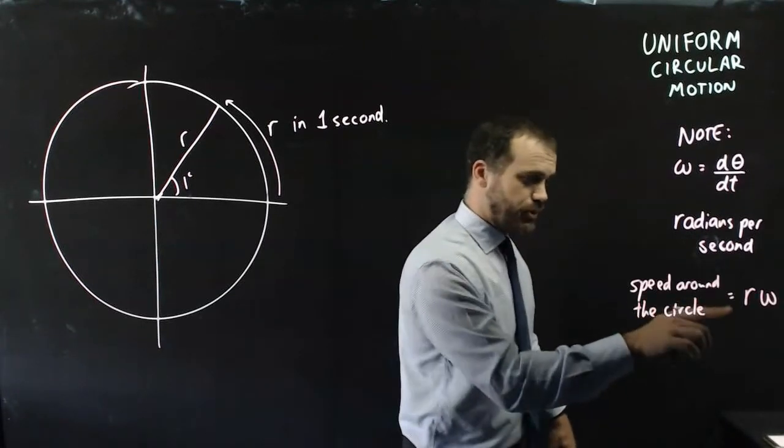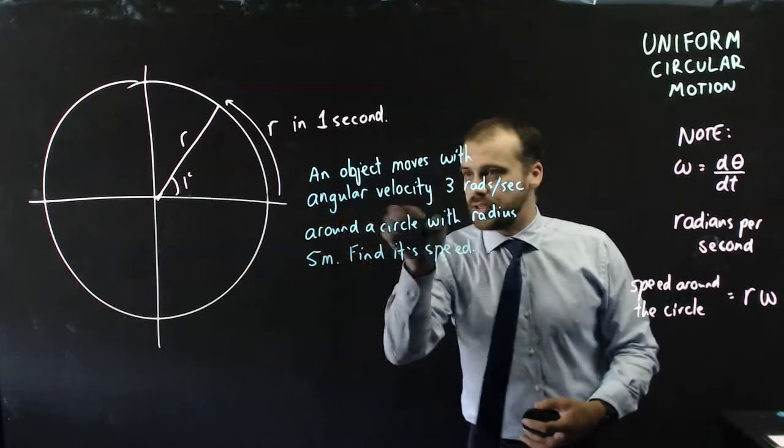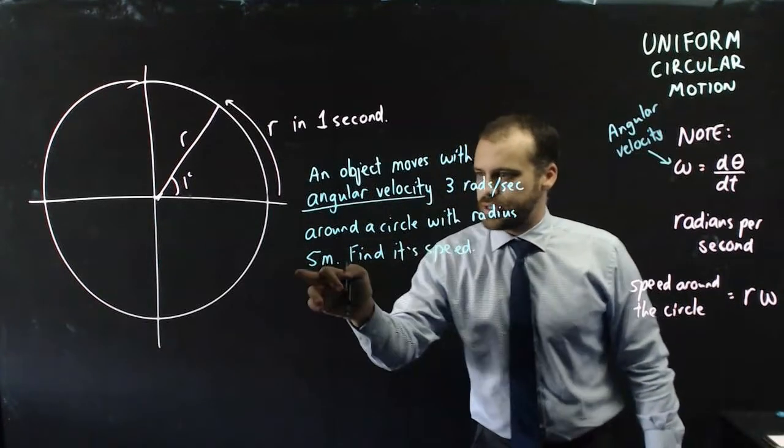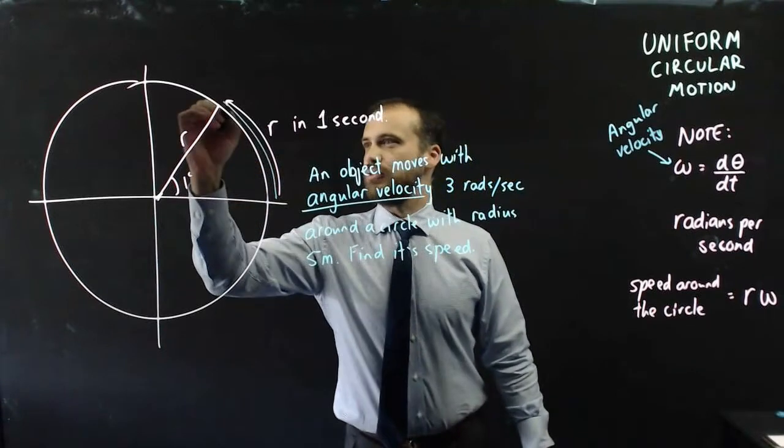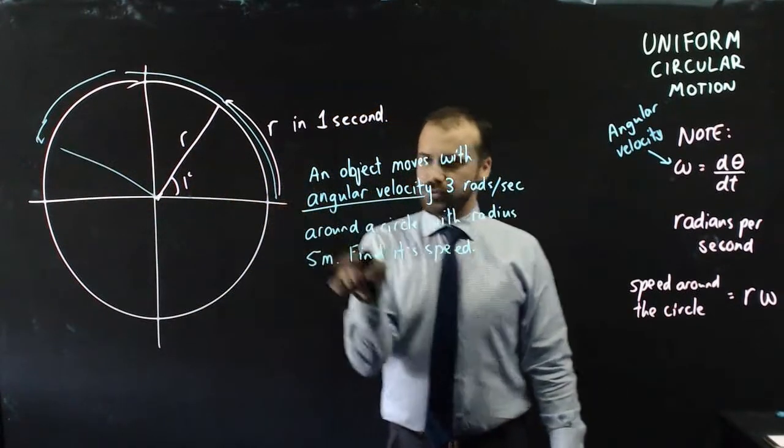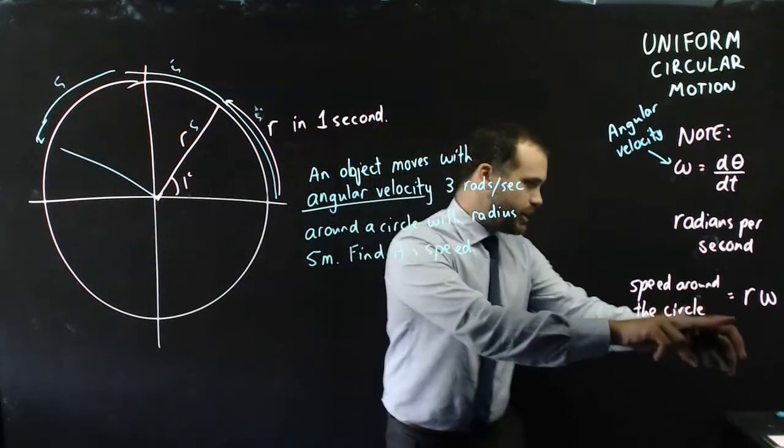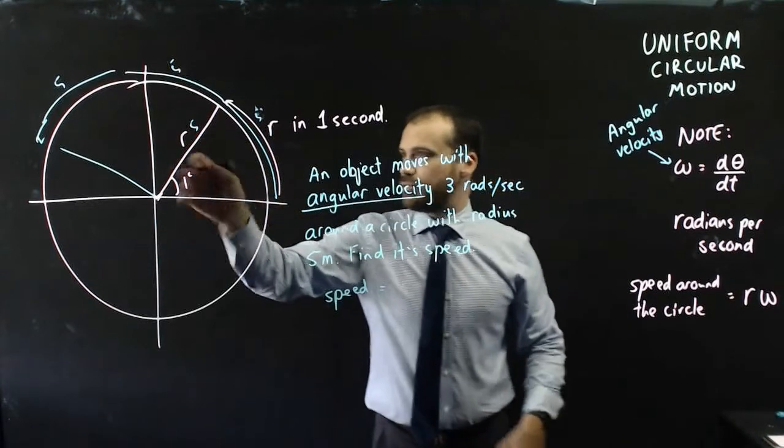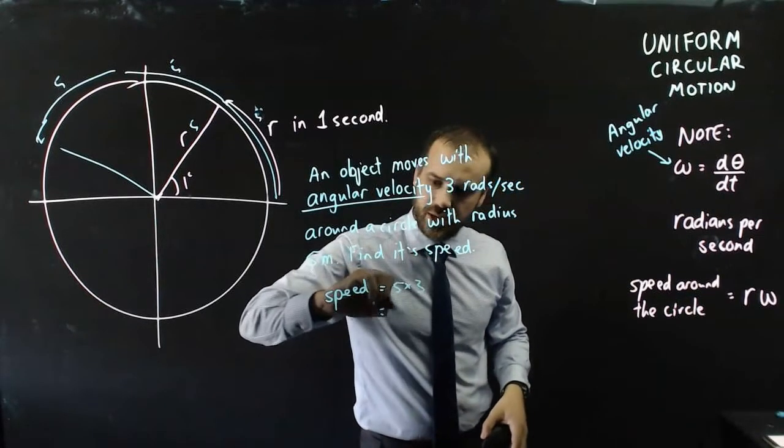A very quick example. An object moves with angular velocity 3 radians per second around a circle with radius 5 meters. Find its speed. If it's moving at 3 radians per second, that moves 1, 2, 3 radians. Each of those radians would have length 5, so 5, 5, 5, and that's where our little formula comes from here. We can say that the speed of this object is equal to the radius of the circle, 5 times its angular velocity, 3 radians per second. 5 times 3 equals 15.